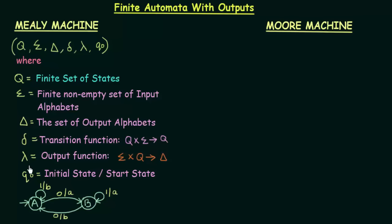Lambda is the output function that maps Sigma cross Q to Delta. This means that the output of the Mealy machine is determined by the current state and the input symbol associated with that state. This will become clear with an example. Q naught is the initial or starting state.